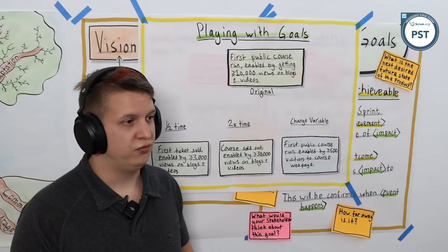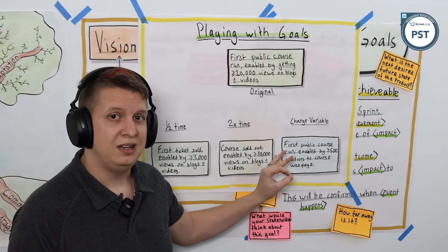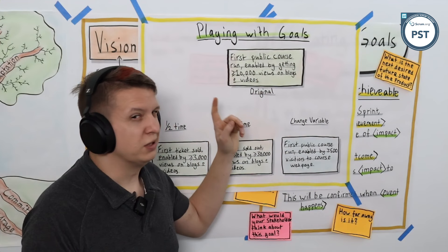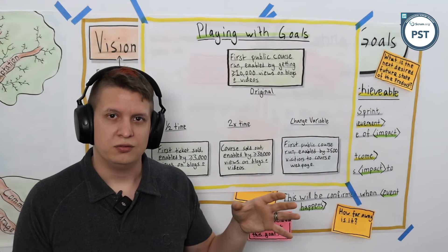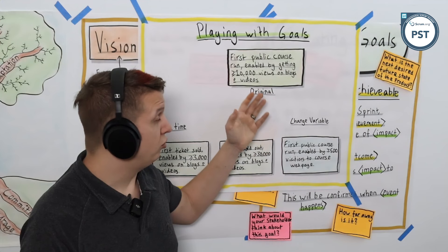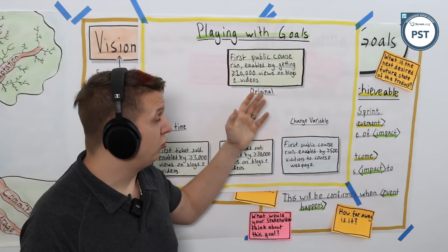And the key thing is to validate continuously. Check in, are we making progress towards this? Is this thing actually working or not? Because let's say you get to 10,000 views on your blogs and videos but you haven't sold a single ticket. Clearly that is not the leading indicator for the lagging measure you would like to influence. So you need to find a different variable to tweak, which means you might need to scrap this goal and make a new one. And that is part of the learning process.